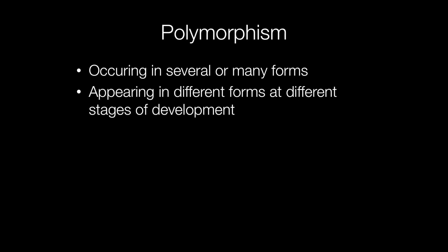The term polymorphism means occurring in several or many forms, or alternatively appearing in different forms at different stages of development. In pathology, polymorphism generally refers to the changes seen in cells.